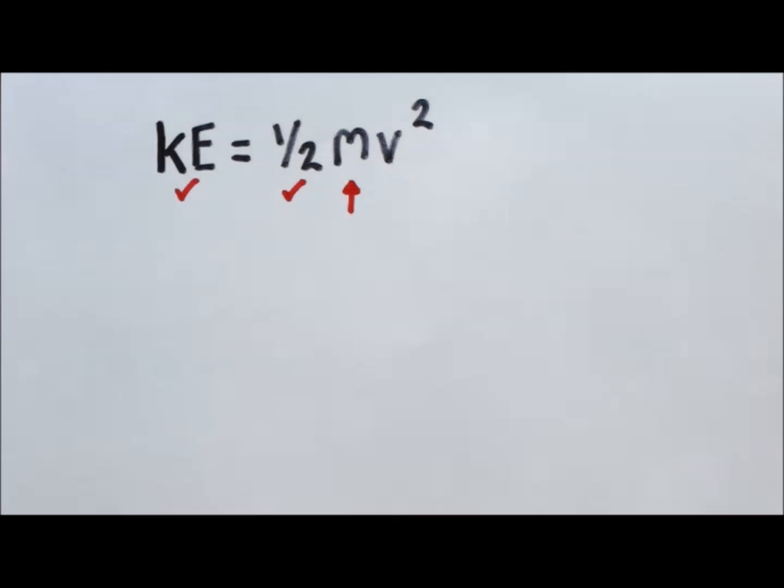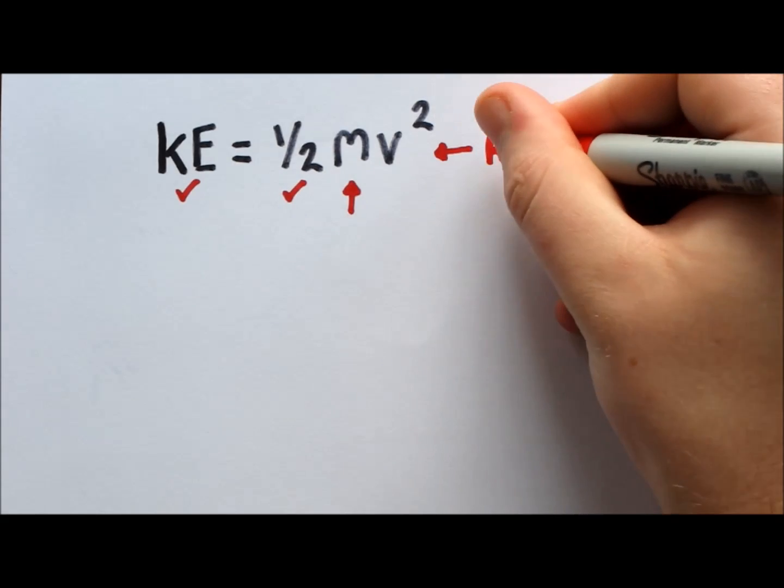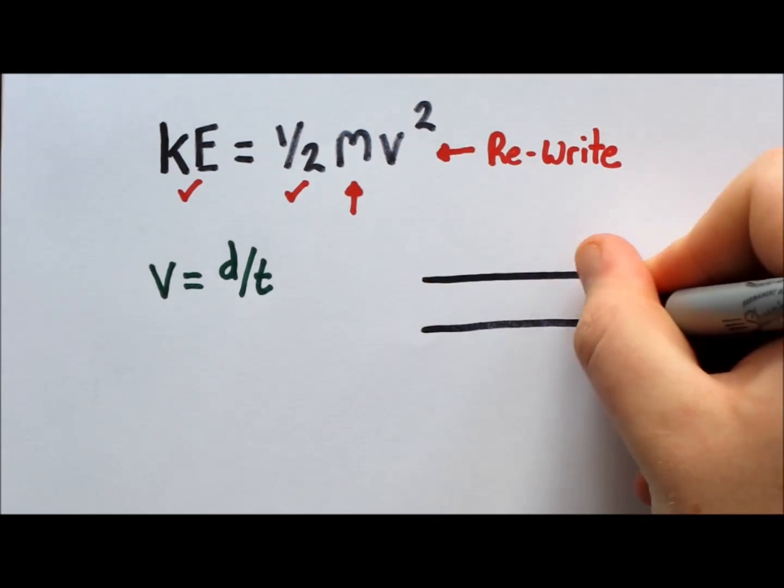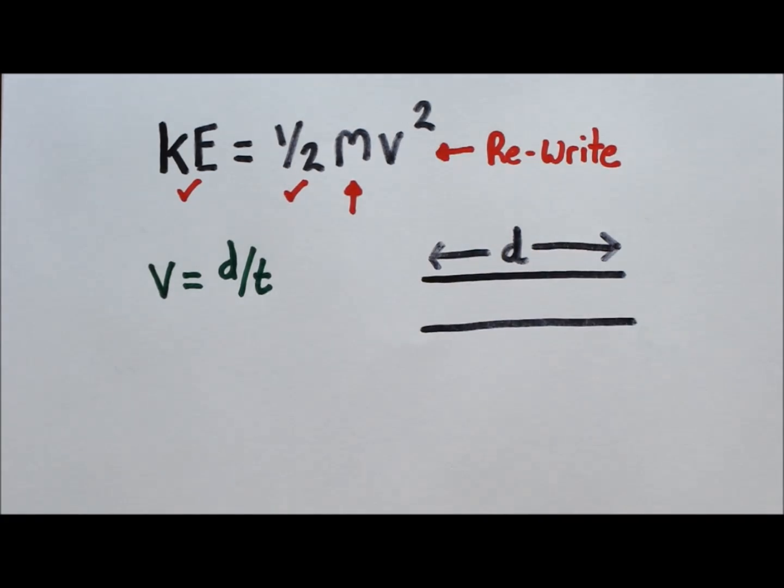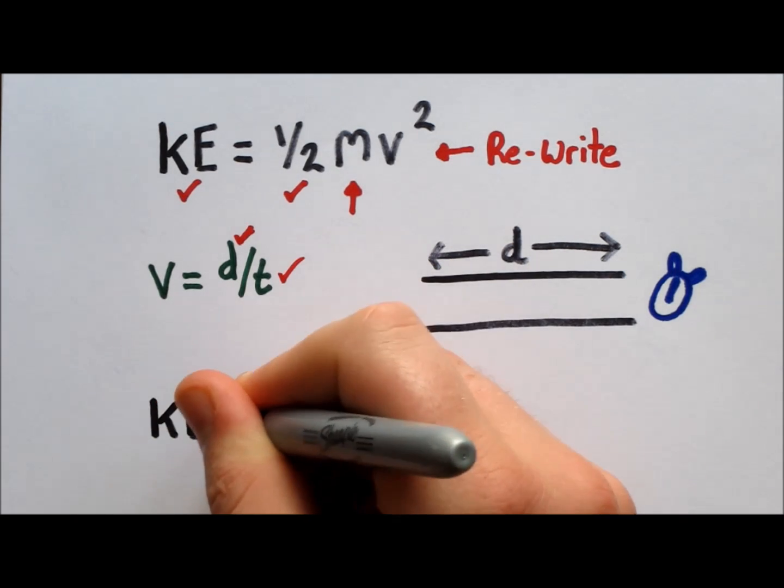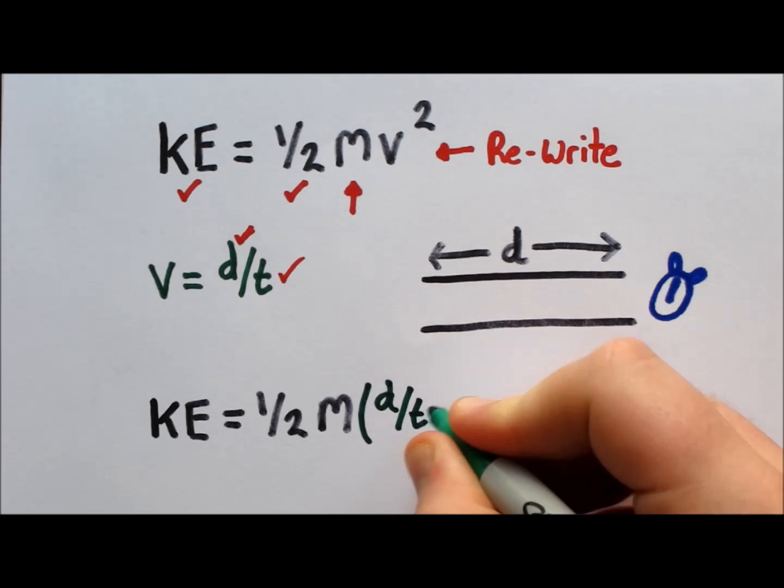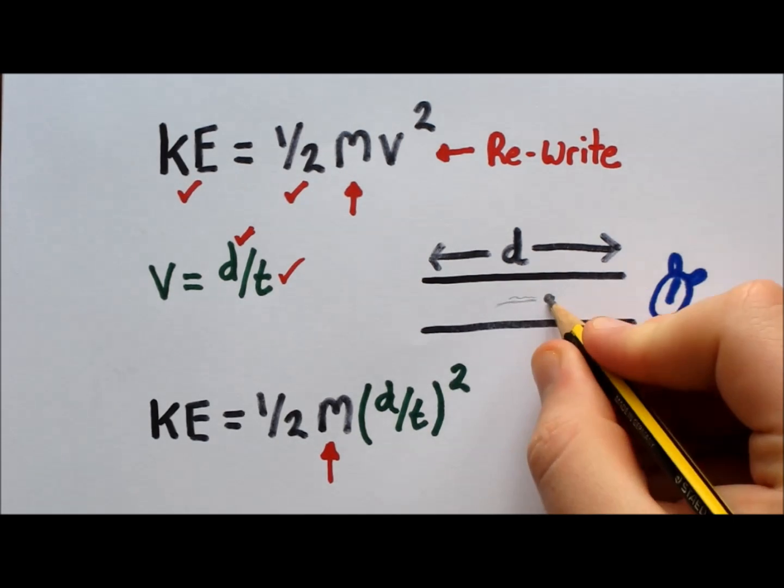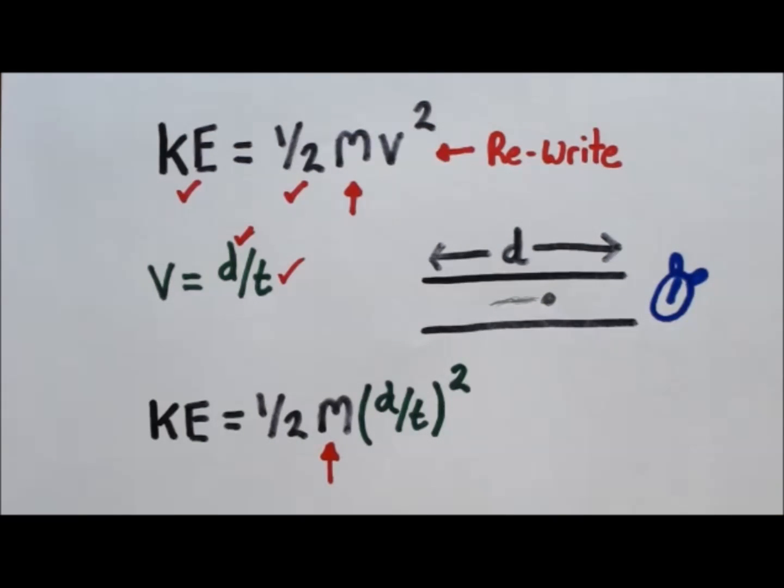One half is just a constant, and we are trying to find the mass. This just leaves velocity. We don't know the velocity, but we can rewrite it as distance over time, because the length of the flight tube is known, and we can accurately time how long it takes an ion to travel down the drift region to the detector. This means we can rewrite the equation, substituting d over t squared for v squared. This now just leaves the mass to be found. The only quantity being measured is the time, hence the name, time of flight.